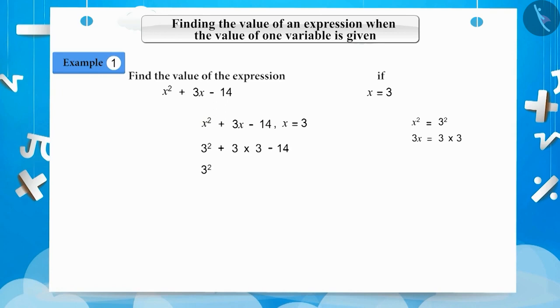3² is 3 multiplied by 3, which is 9. And 3 multiplied by 3 is 9. Substituting these values in the equation, we get 9 + 9 - 14. 9 plus 9 is 18, and 18 minus 14 is 4.